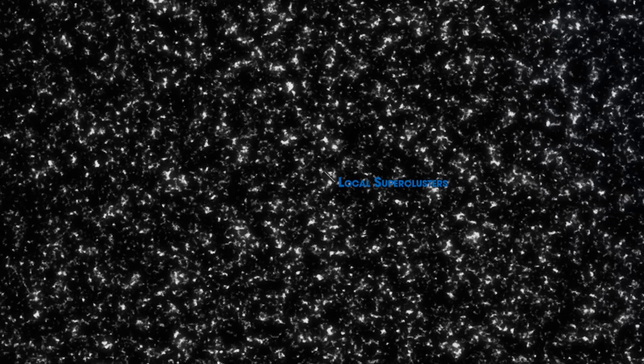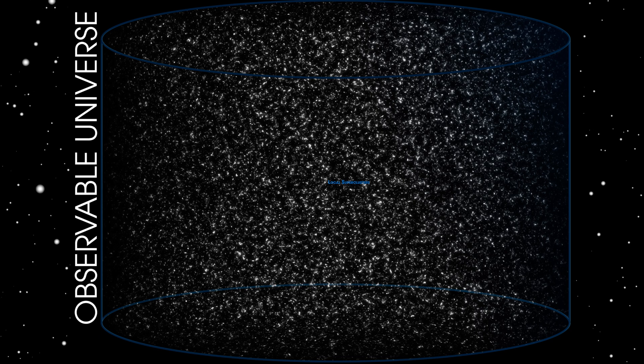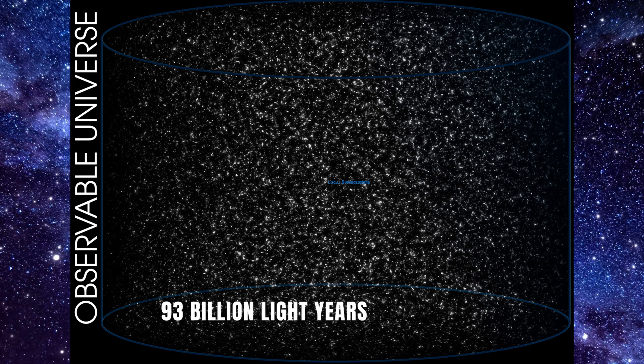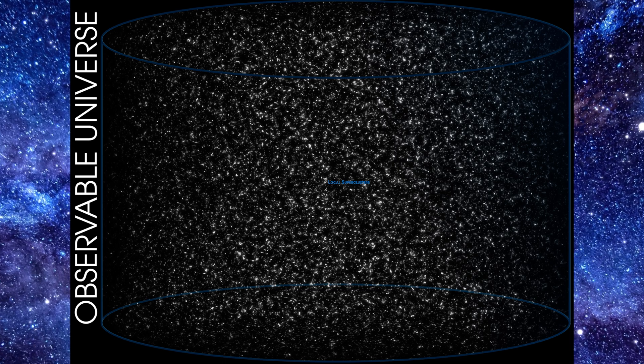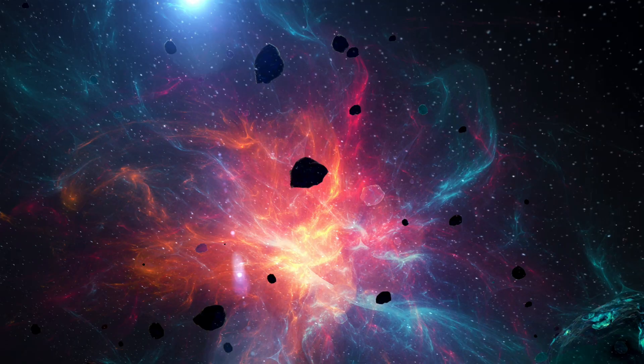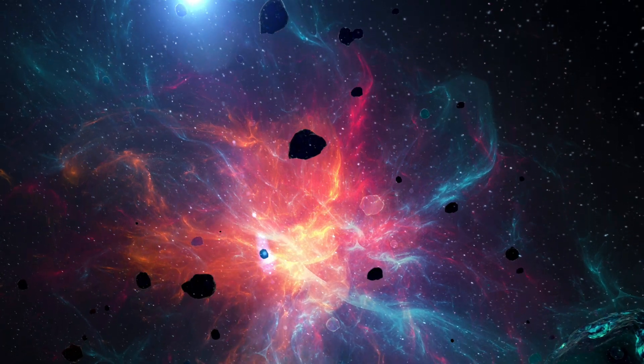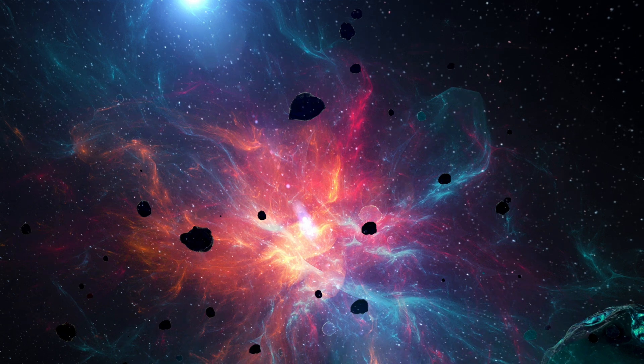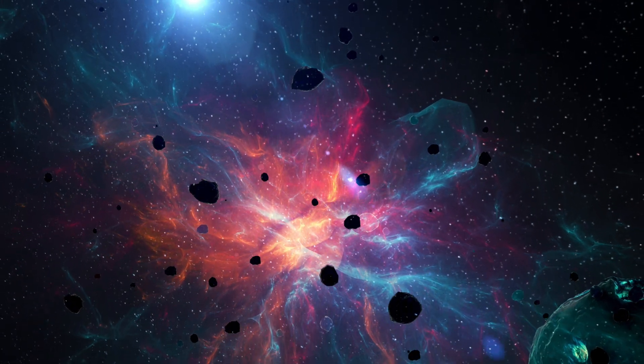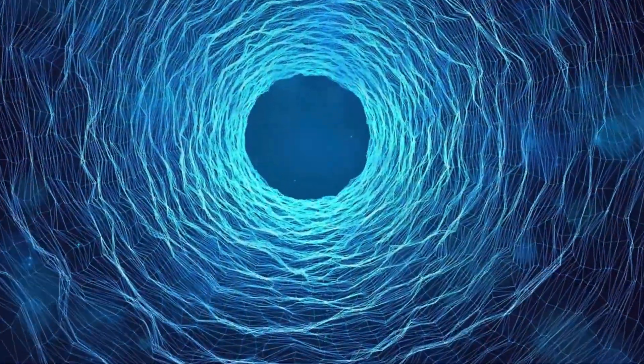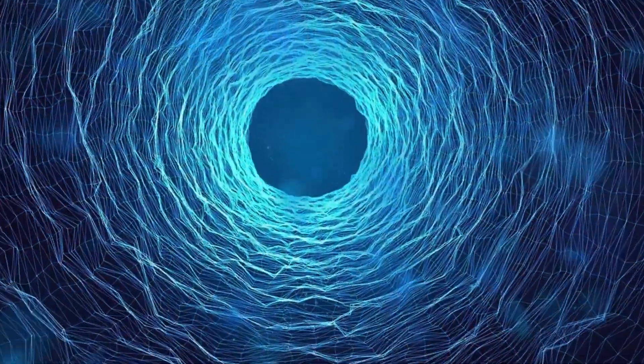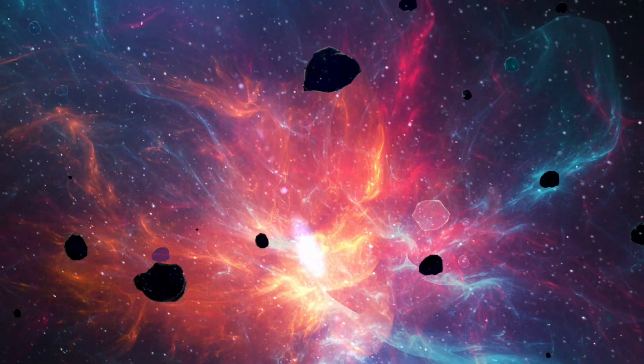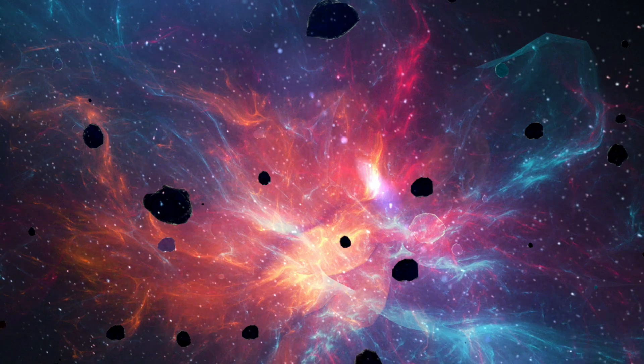But as we push the boundaries of our cosmic exploration, we reach the limits of the observable universe—a mind-boggling expanse stretching approximately 93 billion light-years in diameter. This raises a fascinating question. If the universe is only 13.8 billion years old, how can it be so vast? The answer lies in cosmic expansion. Since the Big Bang, space itself has been stretching, increasing the distances between galaxies at an accelerating pace. Yet beyond the observable universe lies one of the greatest mysteries of cosmology. Some regions of space are receding from us faster than the speed of light, placing them forever beyond our reach. This means that the true size of the universe remains unknown and may in fact be infinite.